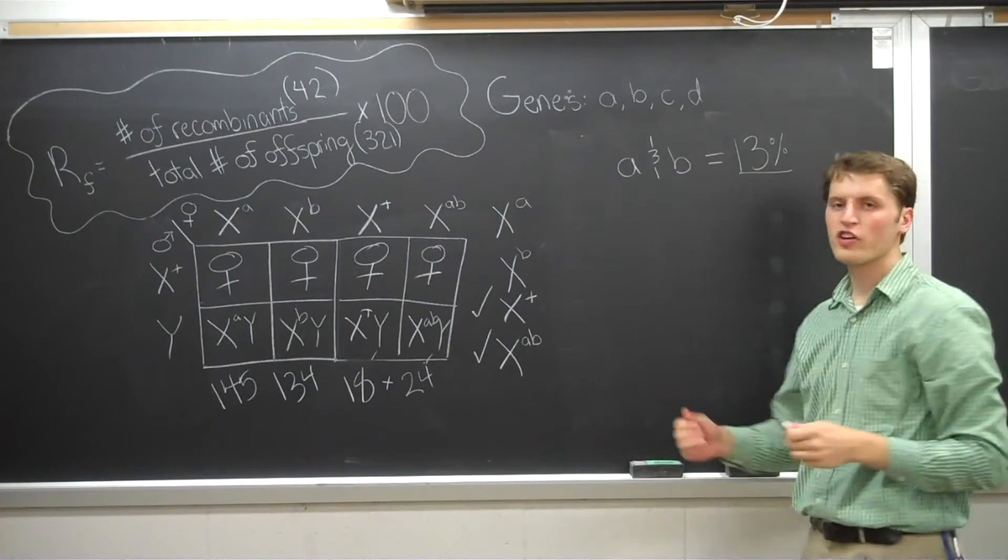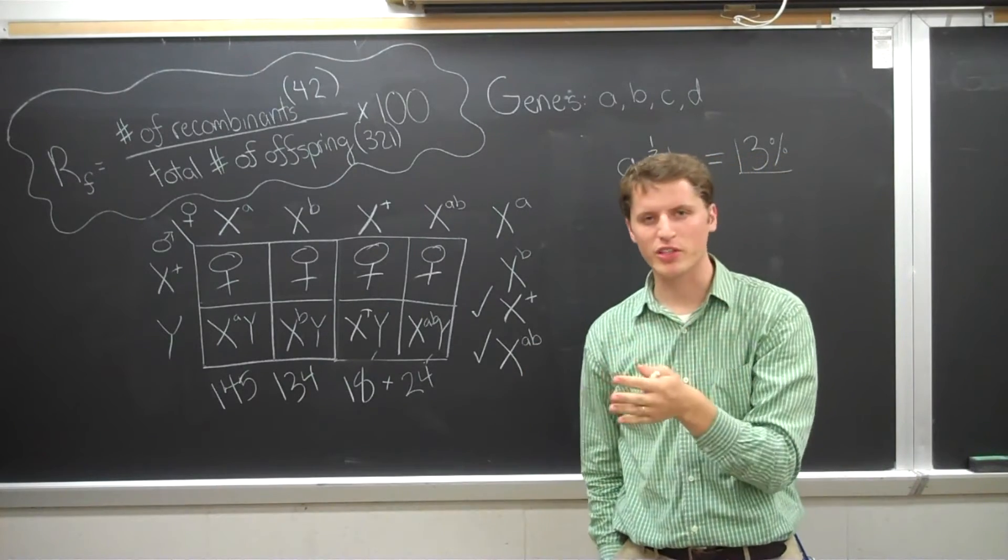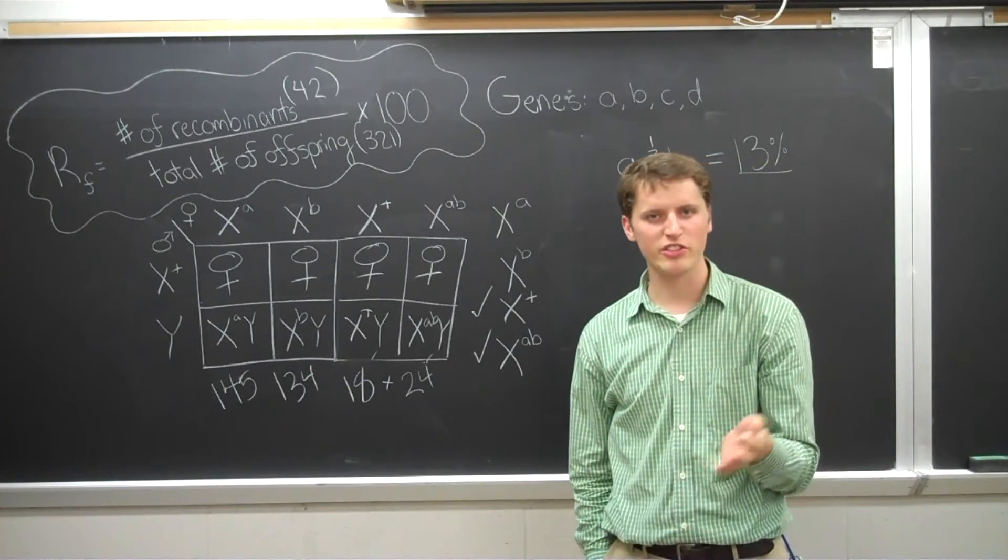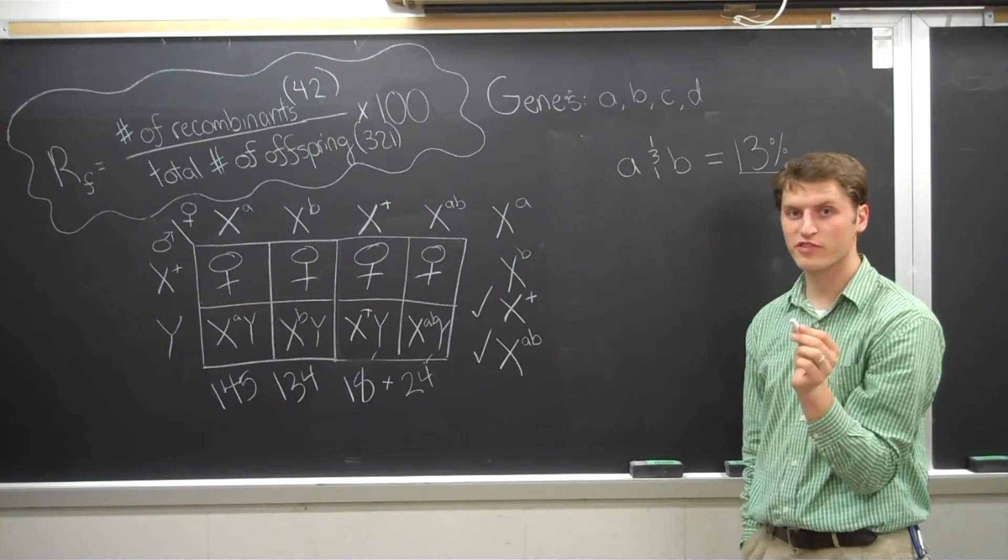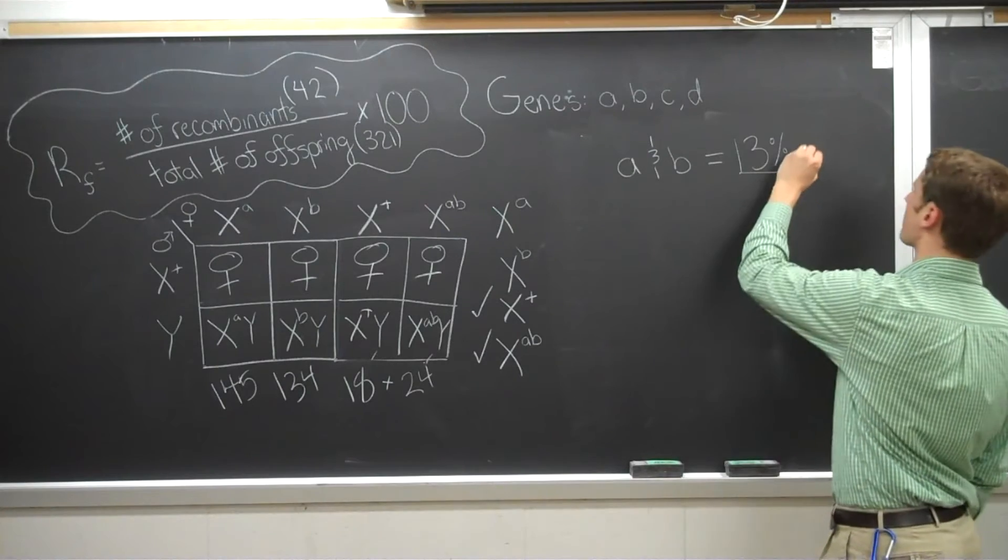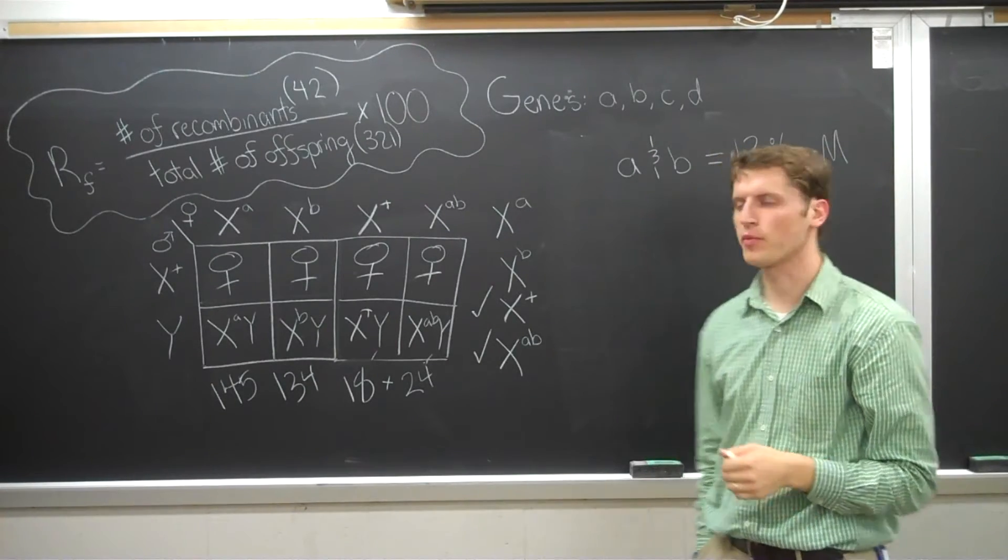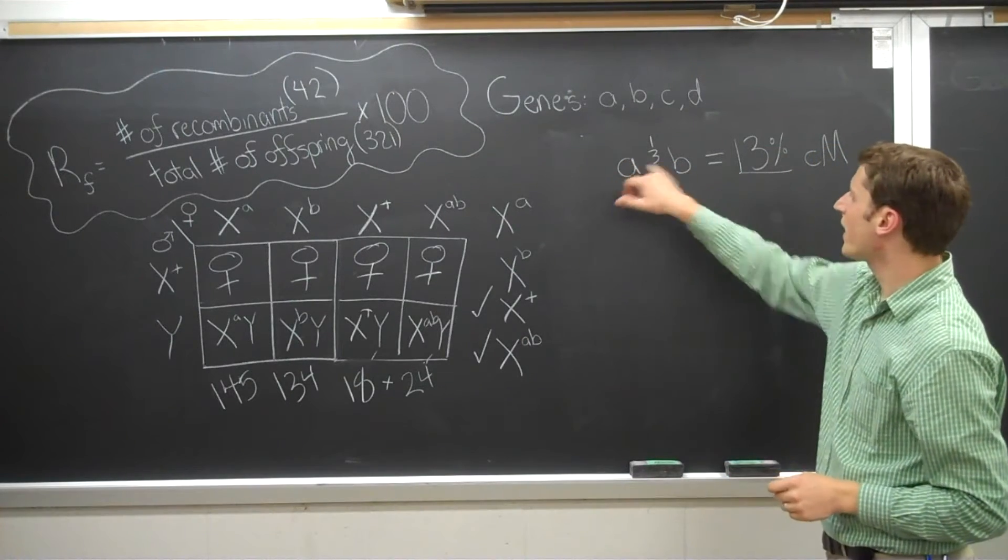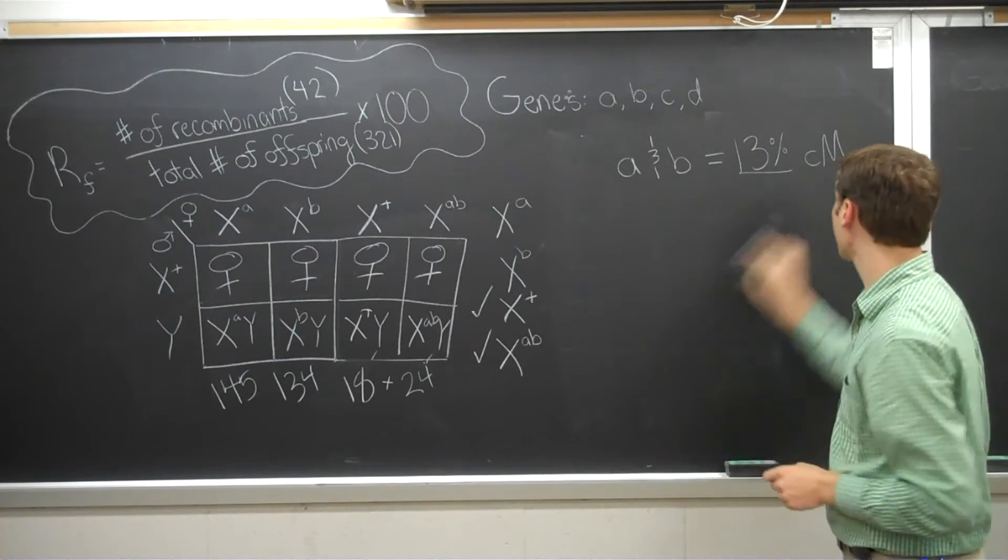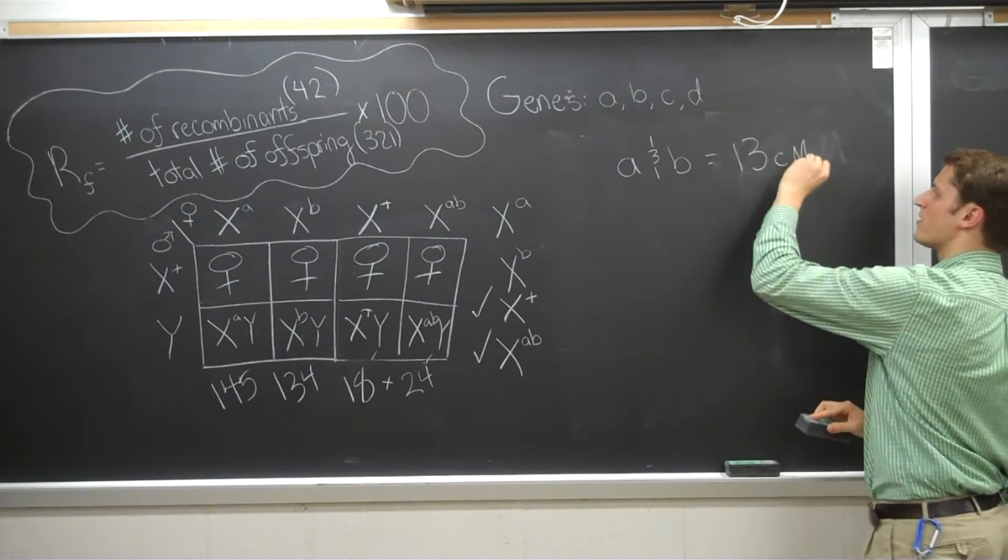This percentage directly correlates with the map units, which is an arbitrary unit used to describe the distance between two things. So 13 percent recombination frequency is also 13 percent. Named after Thomas Hunt Morgan. All right, so the distance between A and B is 13 centimorgan. And I will from now on use centimorgan.